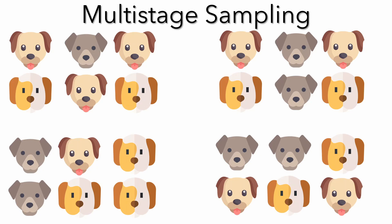Imagine we have four villages, each more or less similar to the next. Our goal is to test 12 dogs to see if they have certain disabilities. If we used simple random sampling, we could probably end up going to every village. Imagine if we had 40 instead of 4 villages — that would make data collection really expensive.